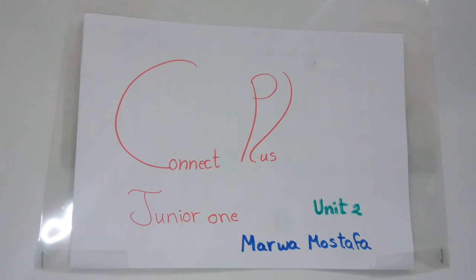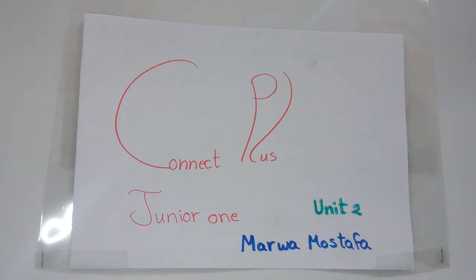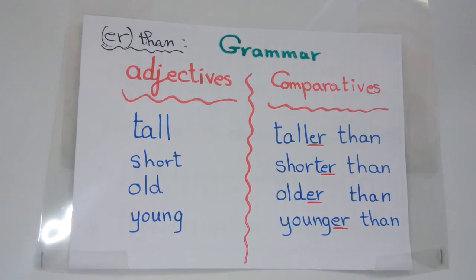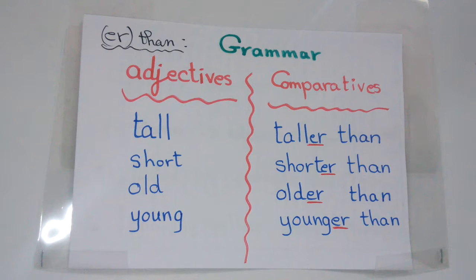Connected Plus Junior 1, Unit 2, by Marwa Mustafa. Today we'll take a grammar lesson about comparative adjectives. When I want to compare between two things or two people, I simply add ER to the adjectives.